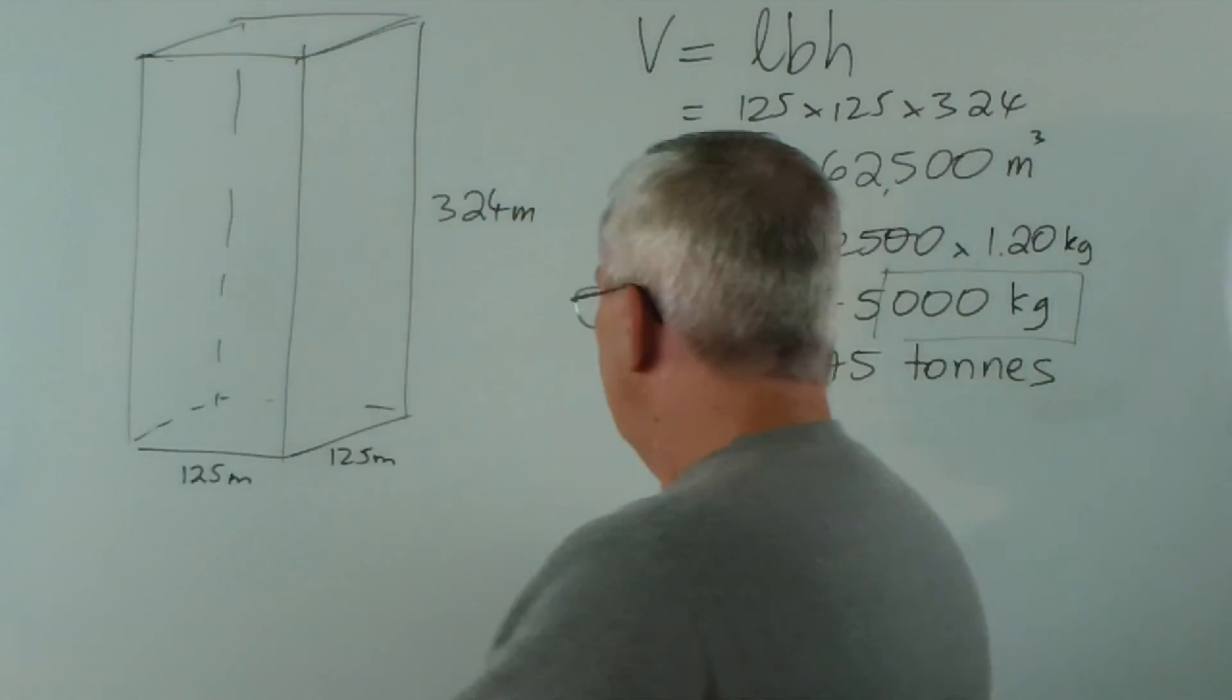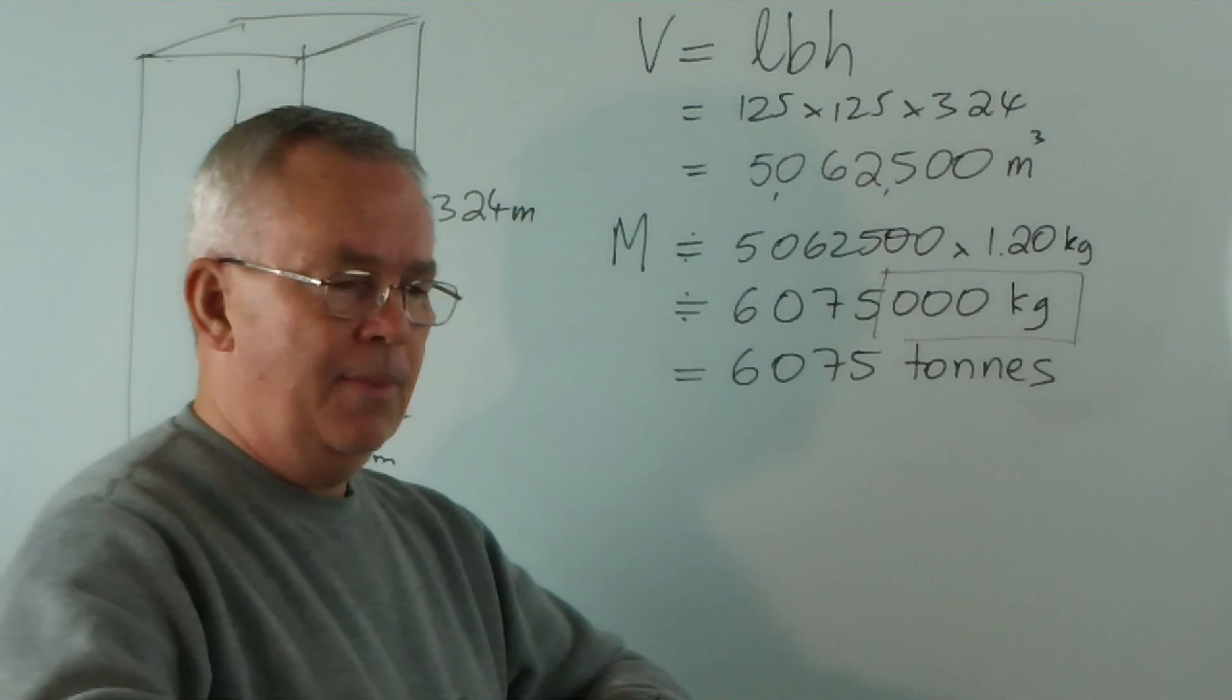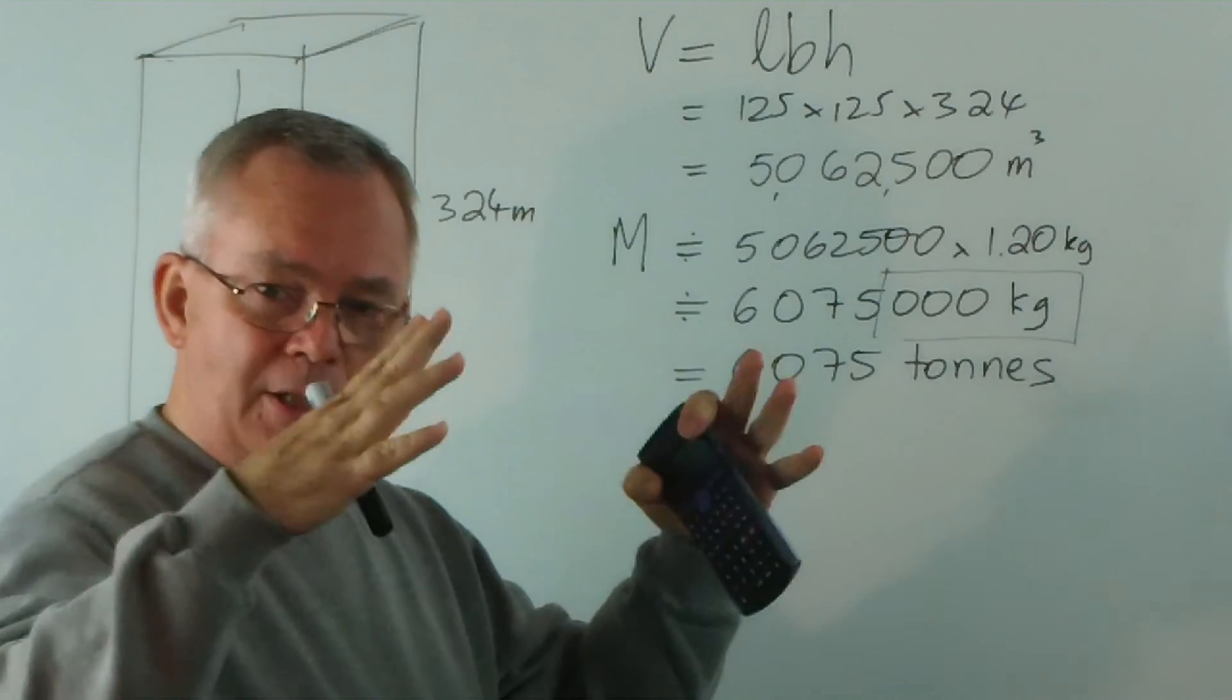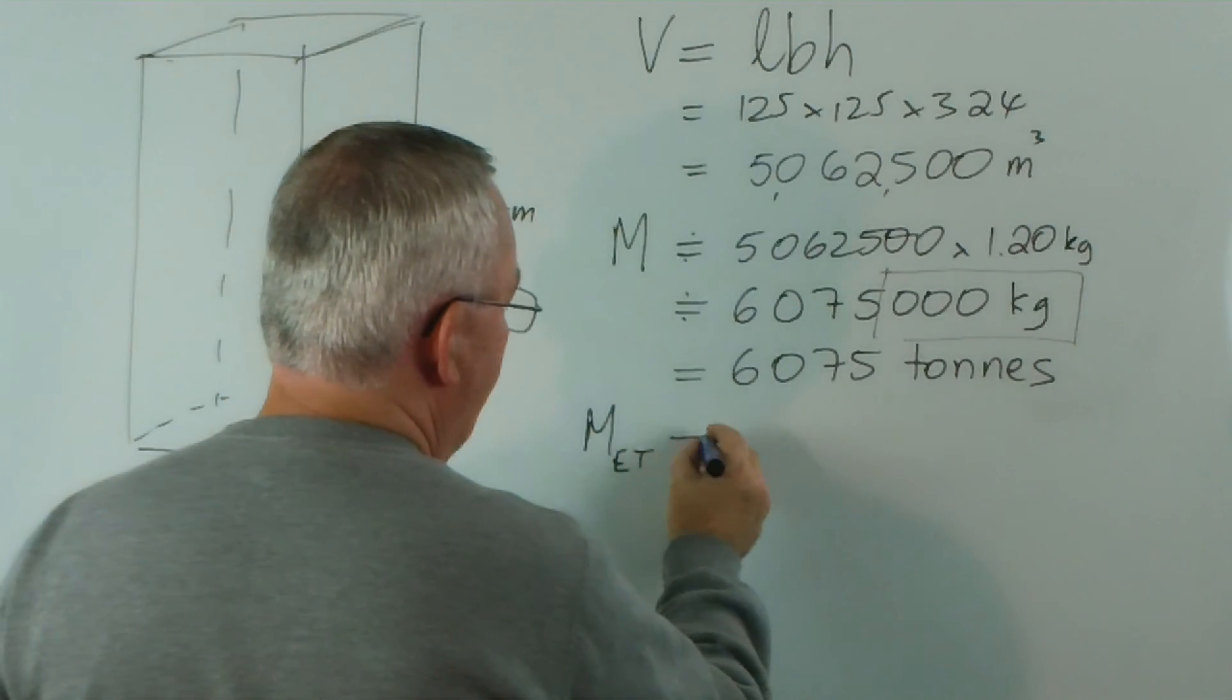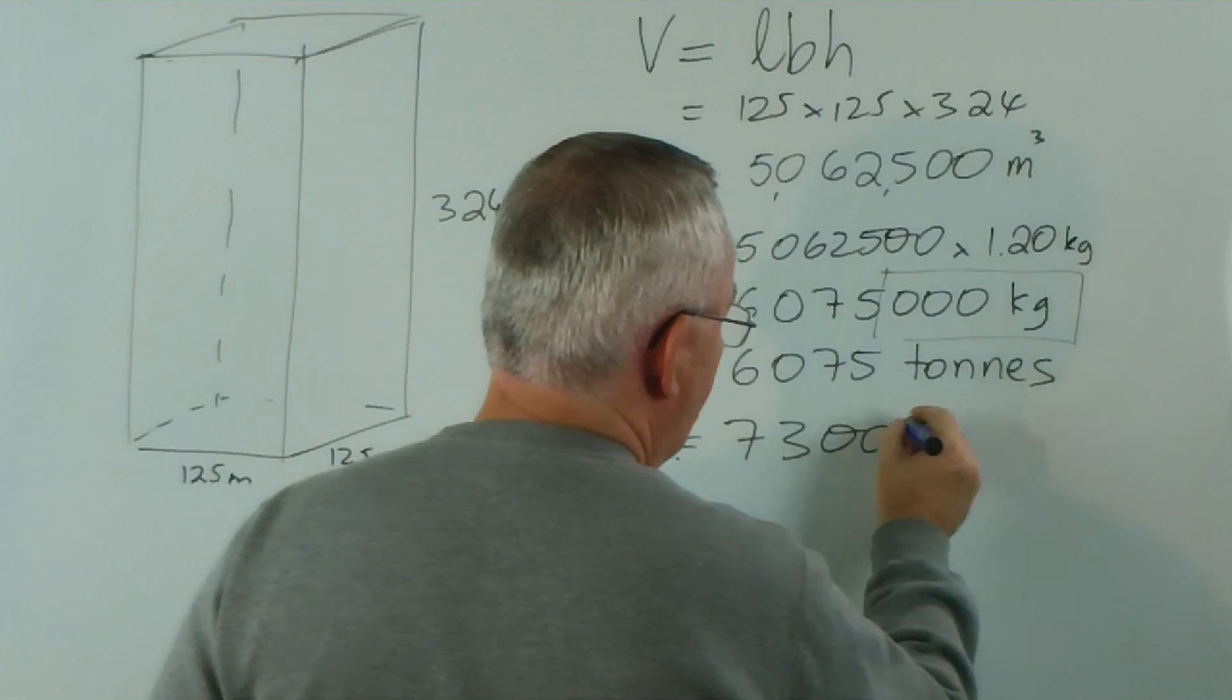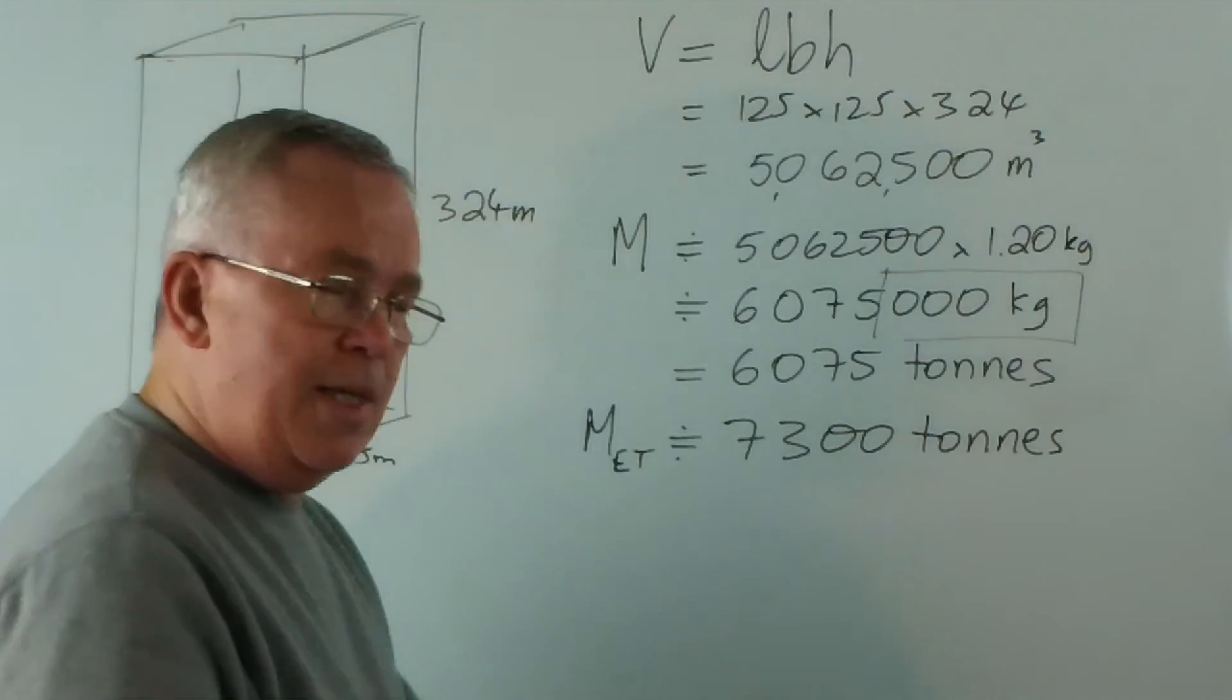Now, interestingly, if you stripped all the rooms and the lifts and the linings out of the tower and just left the structure itself — the structure, I believe, the mass of the Eiffel Tower is about 7,300 tons. Which says this.